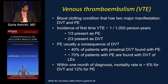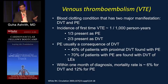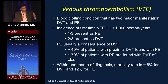When comparing DVT of upper versus lower extremities, the PE risk is much lower with upper extremity — about three to five percent versus one percent — which is why there is significant debate regarding anticoagulating upper limb DVTs. One thing to keep in mind is that both DVT and PE carry very high mortality.